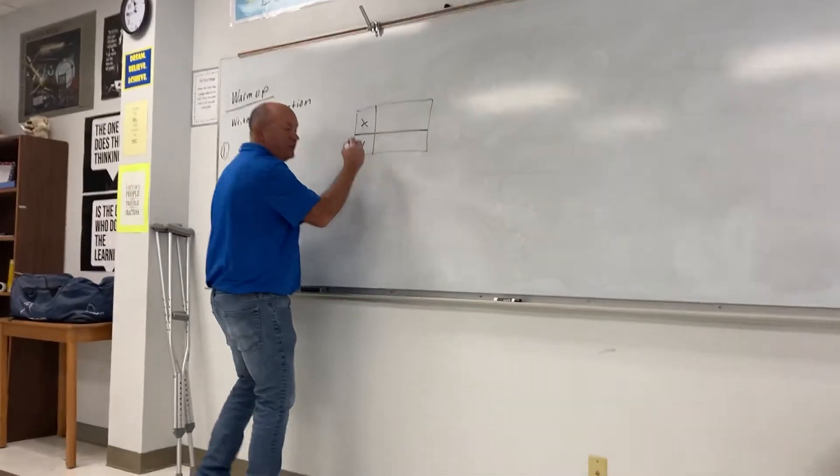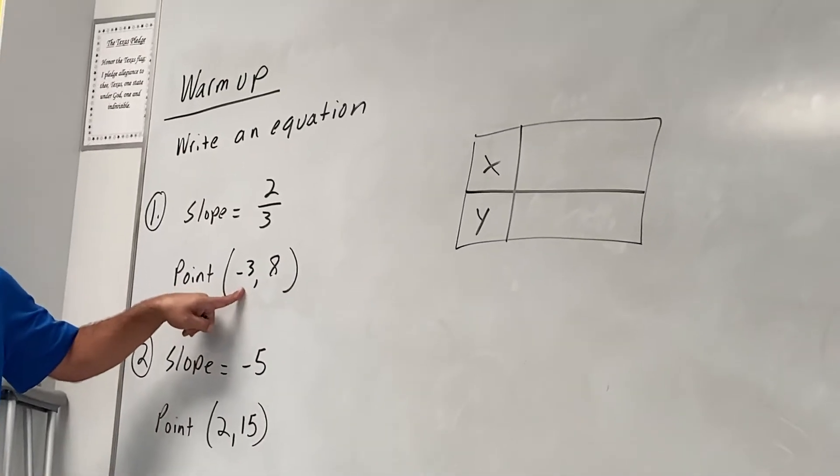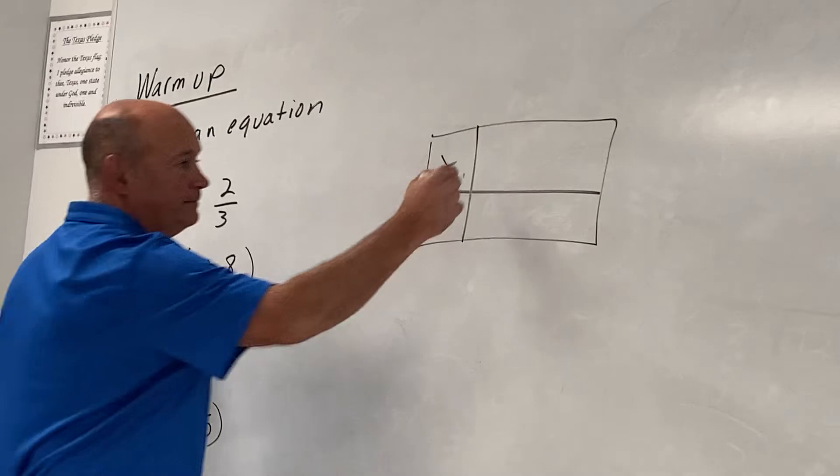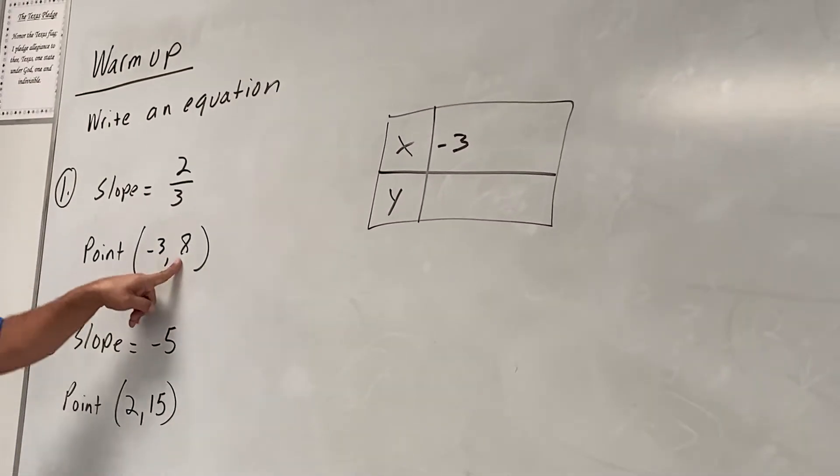What number goes for the x? Isaiah. Negative 3. Do y'all agree with Isaiah? Isn't the first number always x? What number is going to be y then? 8.